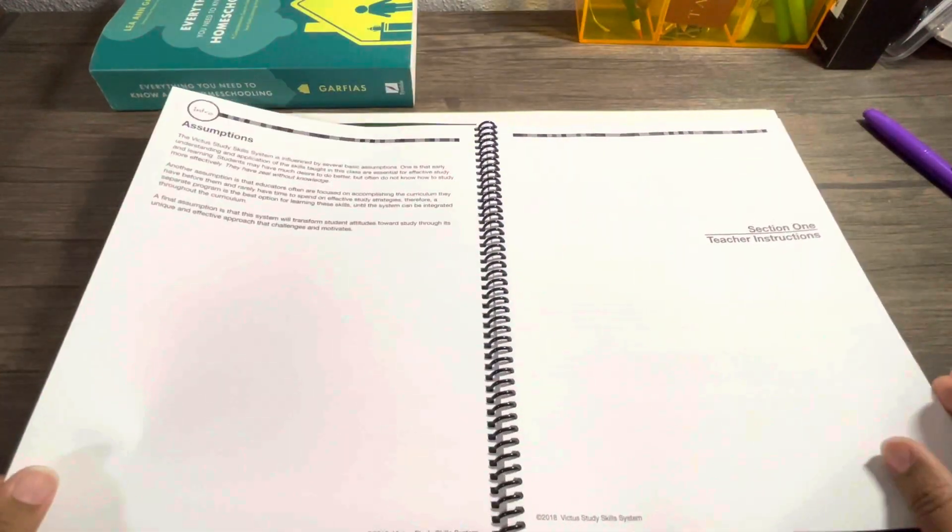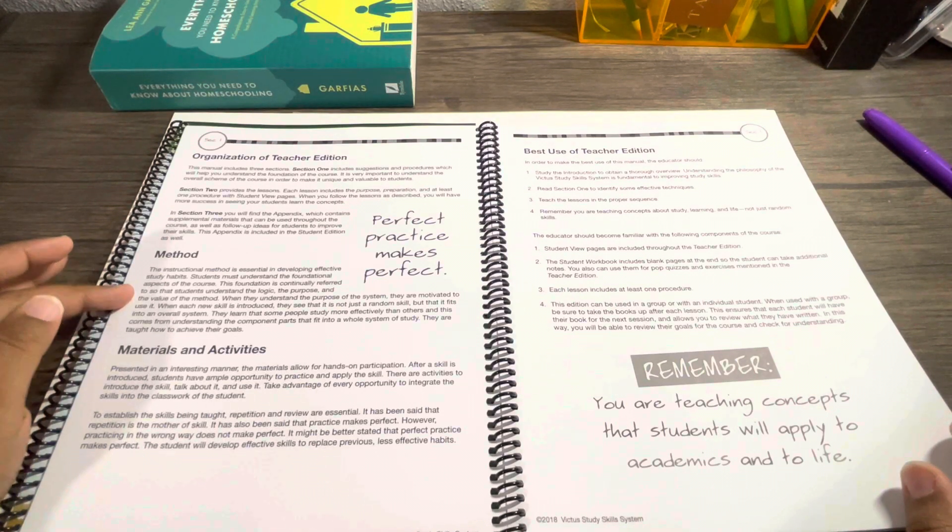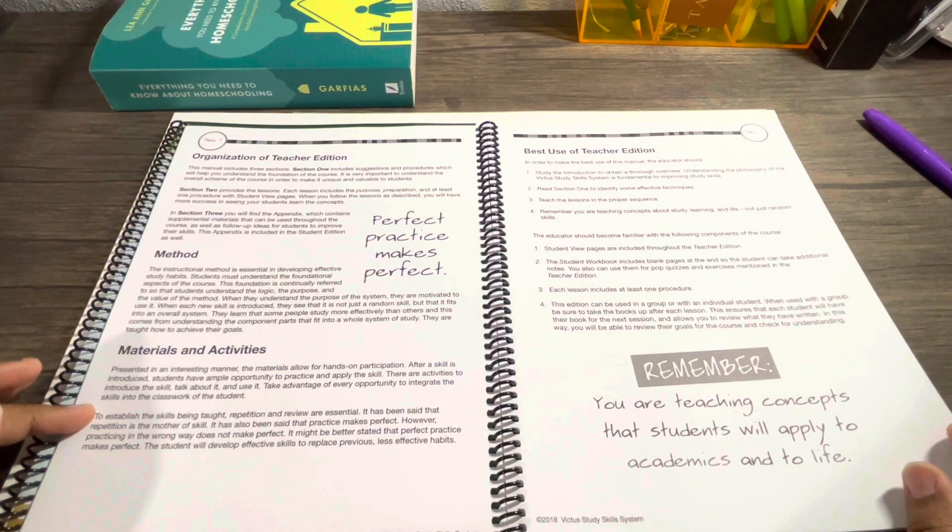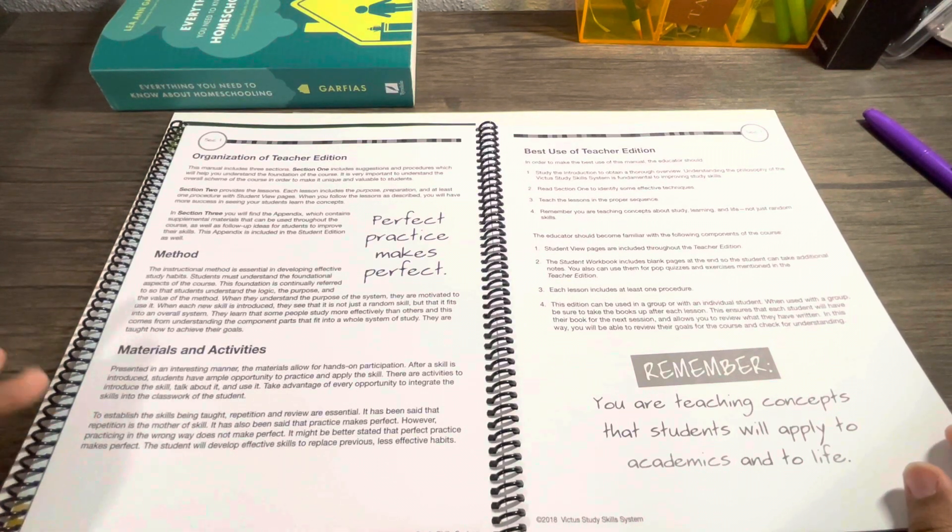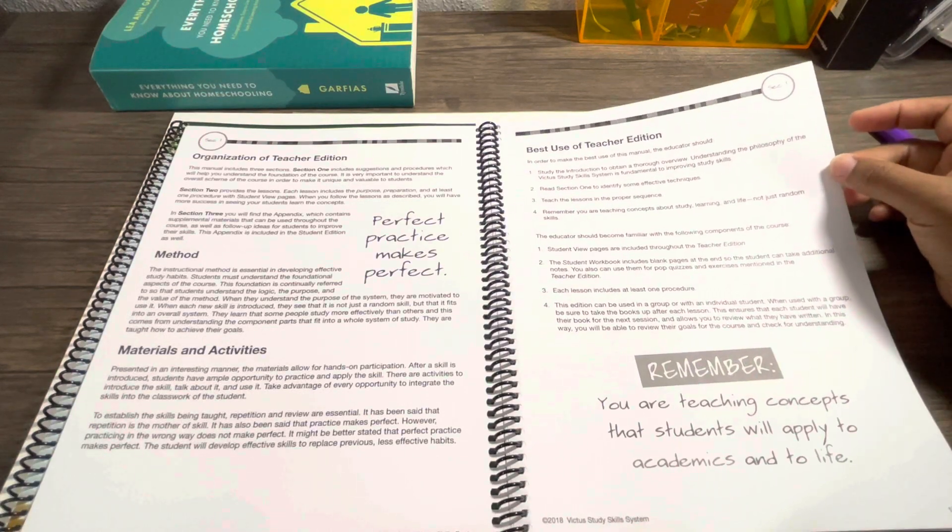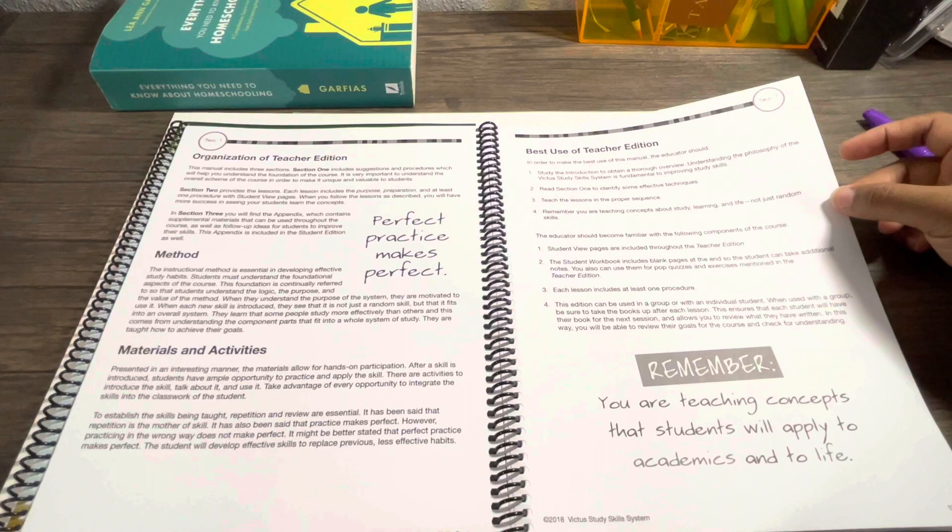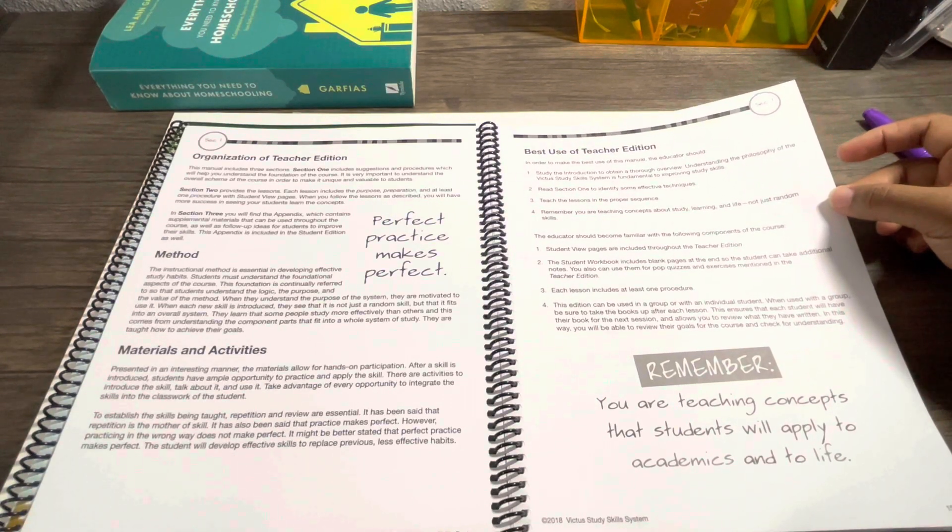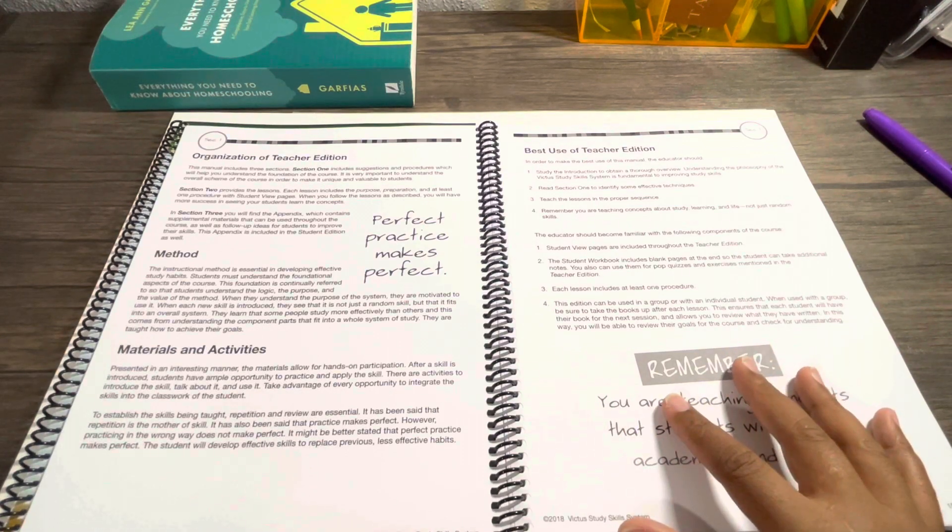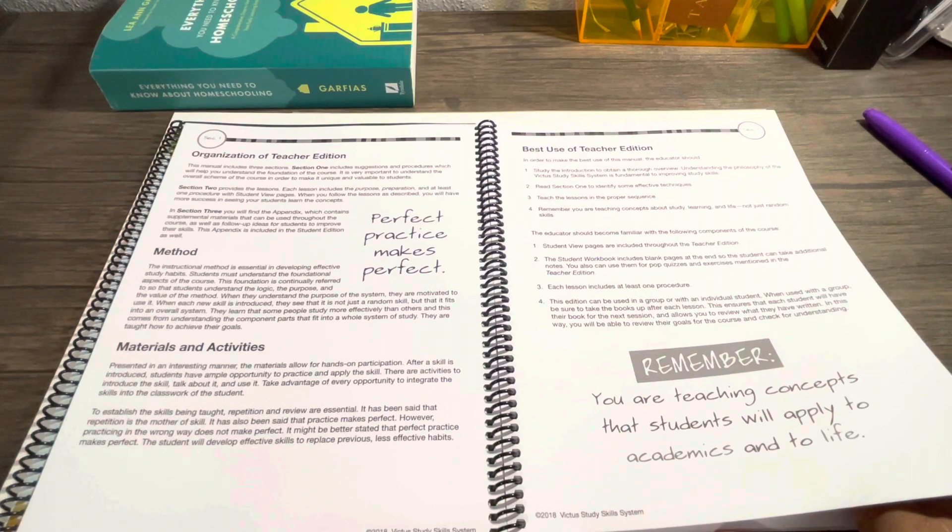The method section says once your kids understand what they are doing, it will work better for them. Materials in the student text allow for hands-on participation, which is very good because they get used to doing it and practicing themselves. I will say from me already reading through this that this is kind of hefty, so if you do this, I would say read it through more than once because it was a lot when I was reading it.